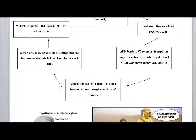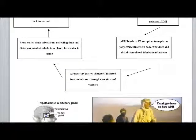which then travels to the kidneys and binds to V2 receptors in the nephron, which happen to be very concentrated on the collecting duct and the distal convoluted tubule membranes. Those happen to be the places where water is reabsorbed as a result of ADH. Usually people don't learn about the V2 receptors, but that's the reason why ADH works on those parts of the nephron.